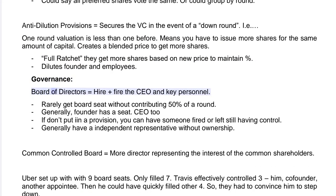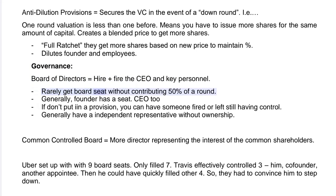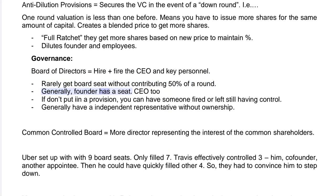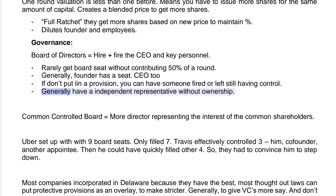Governance: the board of directors has the power to hire and fire the CEO and key personnel. You rarely get a board seat without contributing 50% or more of a round. Generally, the founder has a seat and the CEO has a seat. If you don't put in a provision, you can have someone who was fired or who left still retaining board control. Boards generally also include an independent representative without ownership.